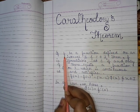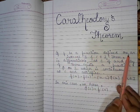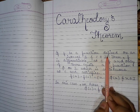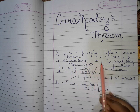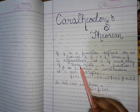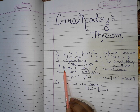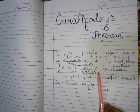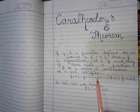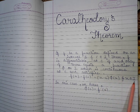It states that if f is a function which is defined on interval I, such that c belongs to interval I, then f is differentiable at c if and only if there exists a function φ on interval I, which is continuous at c and satisfies f(x) minus f(c) is equal to (x minus c)φ(x) for all x belonging to I.